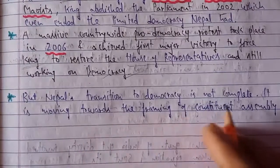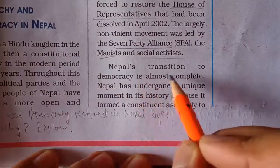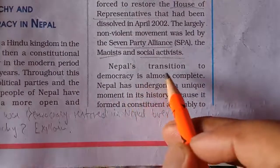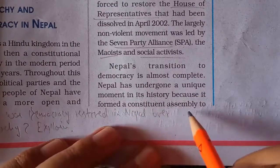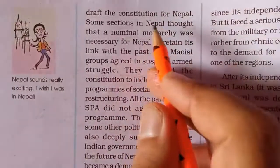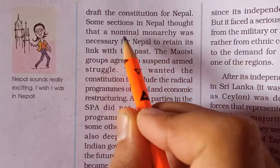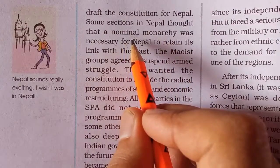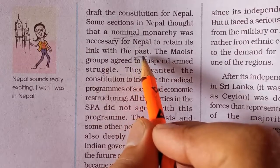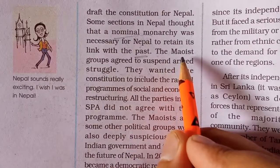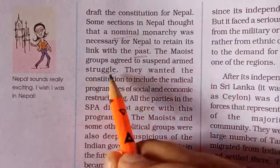Nepal's transition to democracy is not complete — it is still moving towards the framing of a constituent assembly. Nepal has undergone a unique movement in its history, forming a constituent assembly to draft a constitution. Some sections of Nepal thought that a nominal monarchy should remain to connect with their past, as Nepal's past was totally based on monarchy. However, the Maoist group — who were against the monarchs — agreed to suspend armed struggle, as democracy was now in place.